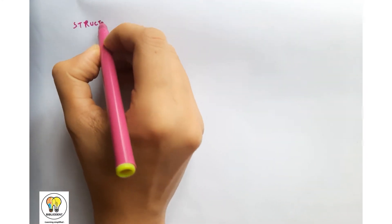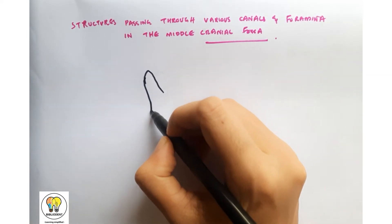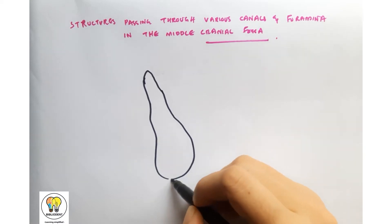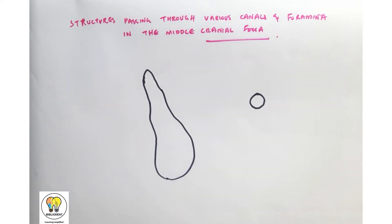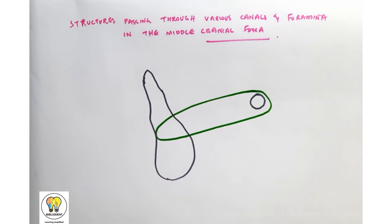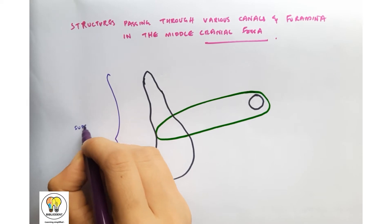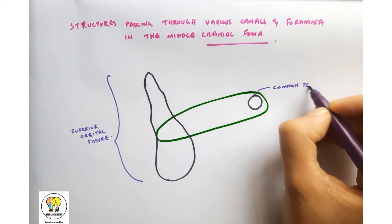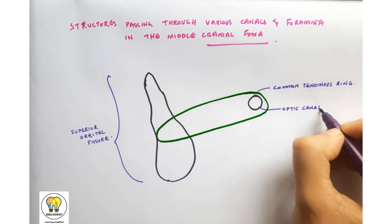Now coming to the structures passing through the various canals and foramina in the middle cranial fossa, let's see the structures related to the superior orbital fissure and optic canal. There is a ring of fibrous tissue surrounding the optic nerve that also divides the superior orbital fissure. This ring is called the common tendinous ring of Zinn. Here is the superior orbital fissure, the common tendinous ring, and the optic foramen or optic canal.